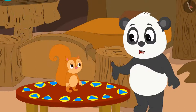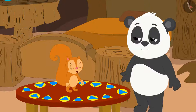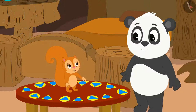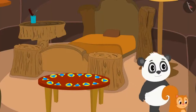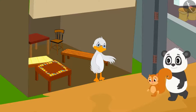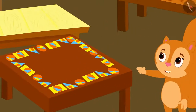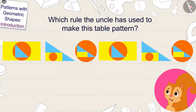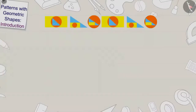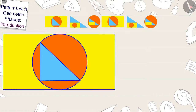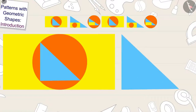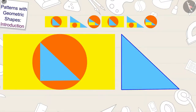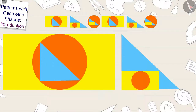Now I understand, Golu said to Chanda. Come on, Golu. I also want to buy a beautiful patterned table for myself from Uncle's shop. Chanda told Golu and both reached Uncle's shop. Chanda liked a patterned table at Uncle's shop. Children, can you tell which rule the uncle has used to make this table pattern? To make this pattern, each time Uncle made the inside of the previous mark as the outermost of the next mark and then made the remaining two shapes inside according to the order made in the previous mark.